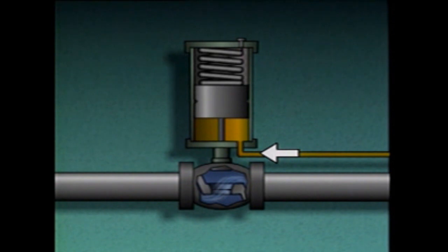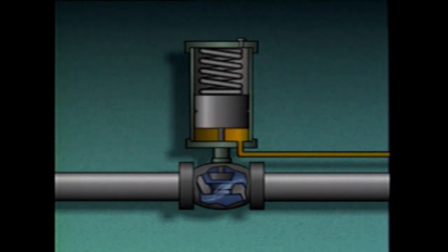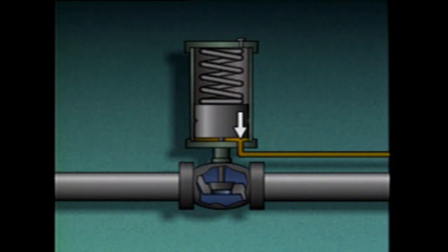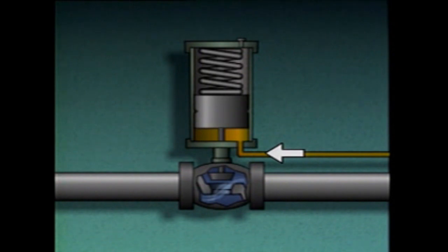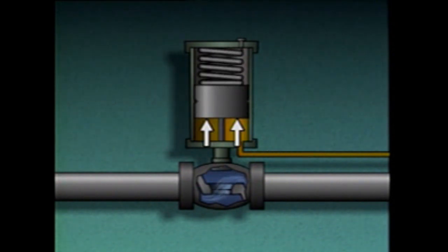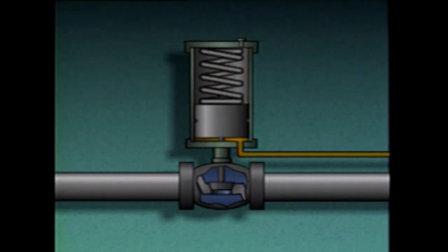When the hydraulic fluid pressure is decreased, the spring forces the piston down, closing the valve and bleeding fluid from the cylinder. The piston can be positioned anywhere in the cylinder by controlling the amount of fluid entering or bled from the cylinder. This actuator is considered to be single-acting because fluid enters the cylinder through only one port and acts on only one side of the piston. It's also described as spring return because a spring forces the piston down to close the valve.